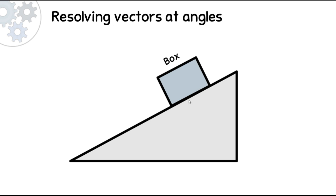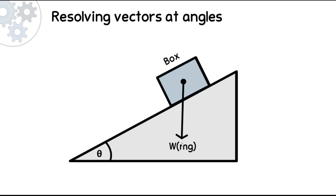So here we have a box on an inclined plane, and that box is stationary, so you know that the forces acting on it are in equilibrium — there is no resultant force on it. We say that this box has a weight that acts downwards due to gravity, and this weight is equal to the mass of the box multiplied by the gravitational field strength, which is 9.81 on Earth. The angle of the inclined plane is theta.